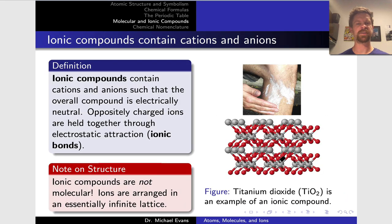At this point we've hit on the charges and some of the names of both monatomic and polyatomic ions. Now it's time to think about the structure of ionic compounds when we start combining cations and anions. On the right hand side of the slide I'm just featuring an example of an ionic compound titanium dioxide which is found in sunscreen.